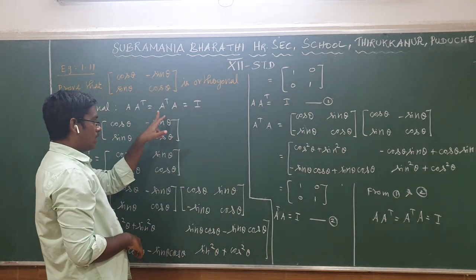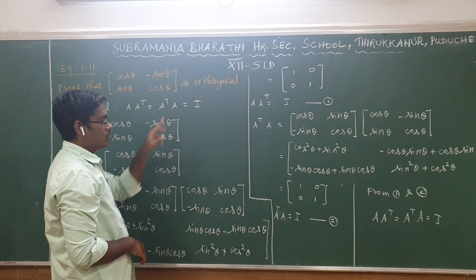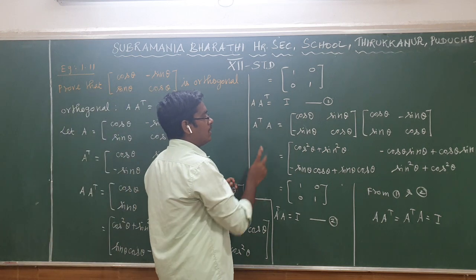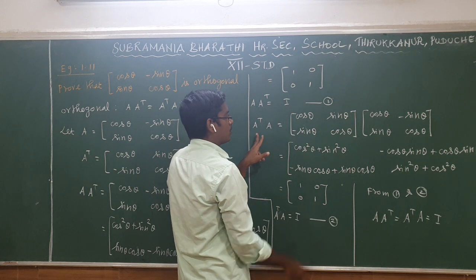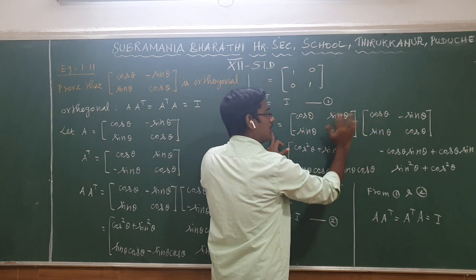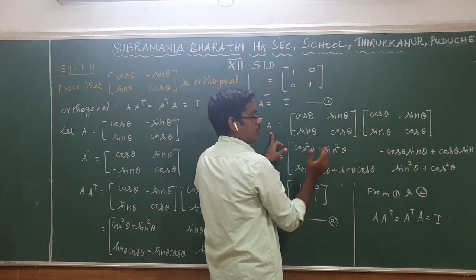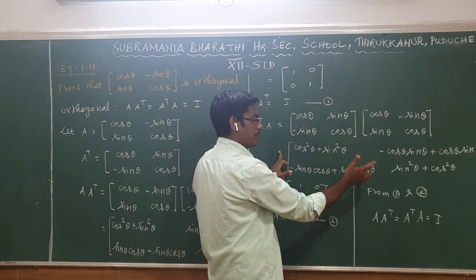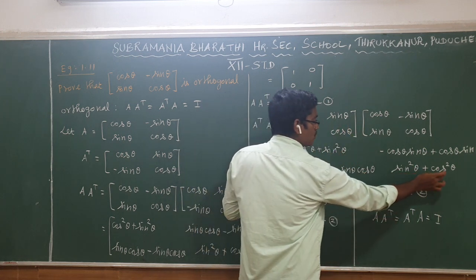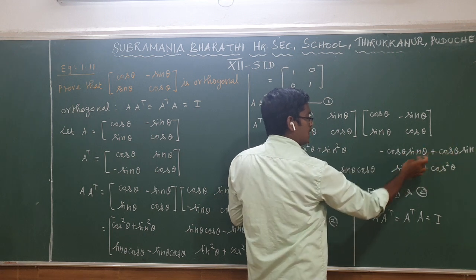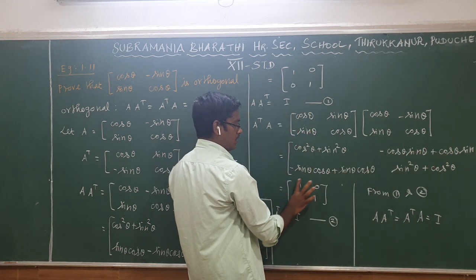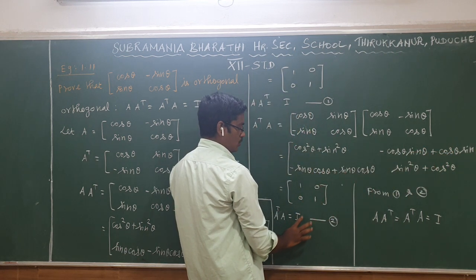Now we also compute Aᵀ·A. Multiplying Aᵀ into A, the matrix multiplication is the same process with the same cos θ and sin θ terms. The plus and minus terms cancel out, and the diagonal terms again give 1. The result is again [1, 0; 0, 1].